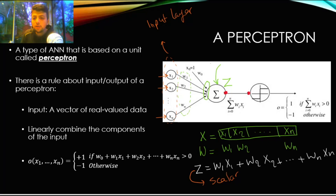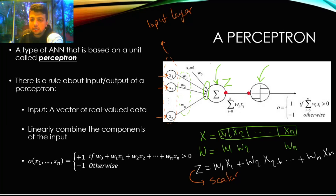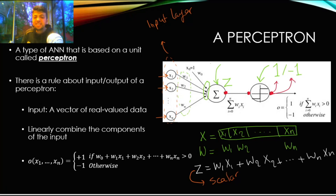After computing Z, it passes through the step function. The step function outputs +1 if its input is greater than zero, and -1 if its input is less than zero. So the step function is a way of generating either +1 or -1 as the output of our perceptron, depending on whether Z is bigger or smaller than zero.